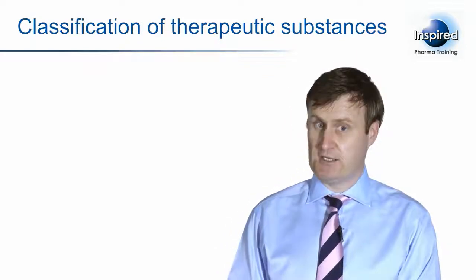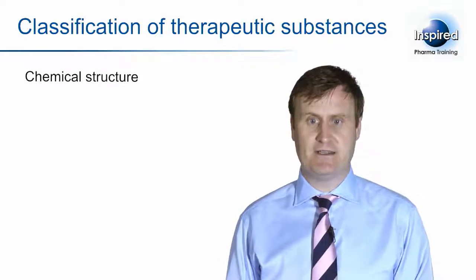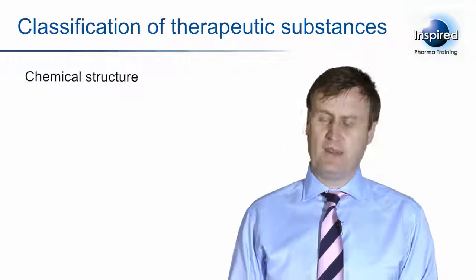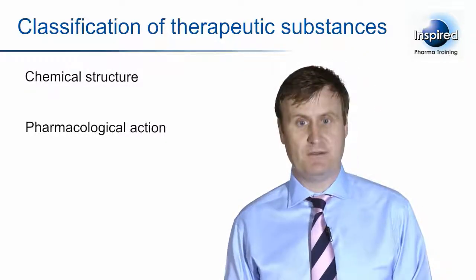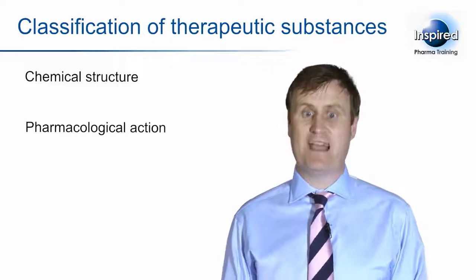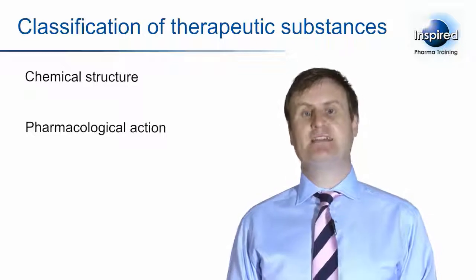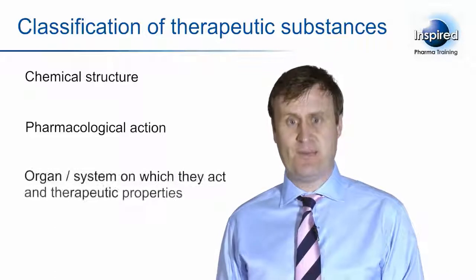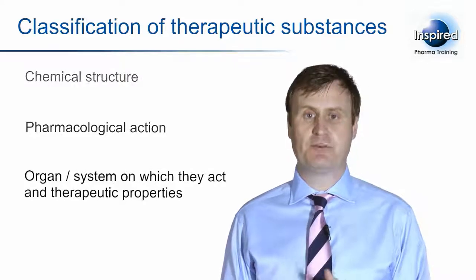Drugs can be classified by a number of methods. These include their chemical structure — for example, are they penicillins, steroids, macrolides, or peptides? They can also be classified by their pharmacological action — for example, are they diuretics, hormones, or analgesics? Or they can be classified by a combination of the target organ system that they target and their chemical, pharmacological, and therapeutic properties.